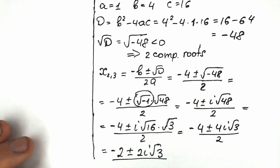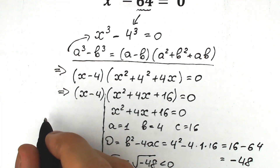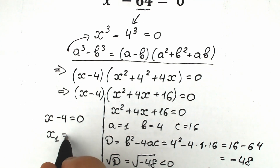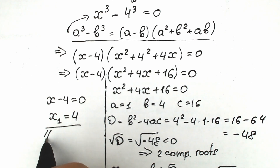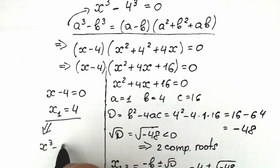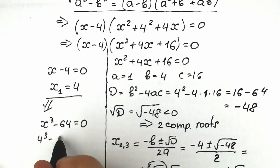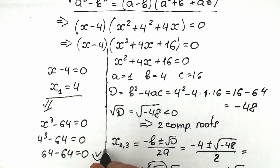Now let's go back to the real number root. From x minus 4 equal to zero, we get x₁ equal to 4. Let's verify: plugging into x cubed minus 64 equal to zero, we get 4 cubed minus 64, which is 64 minus 64 equal to zero. Correct — this is a valid real number root.